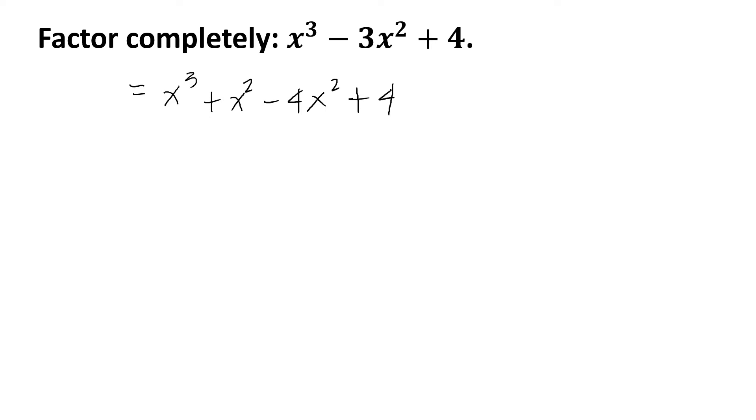Notice that we have x² and positive 4, which can be made a perfect square trinomial when we add -4x or 4x to the expression. Hence, we will do as the next method adding and subtracting suitable terms, and that is 4x.